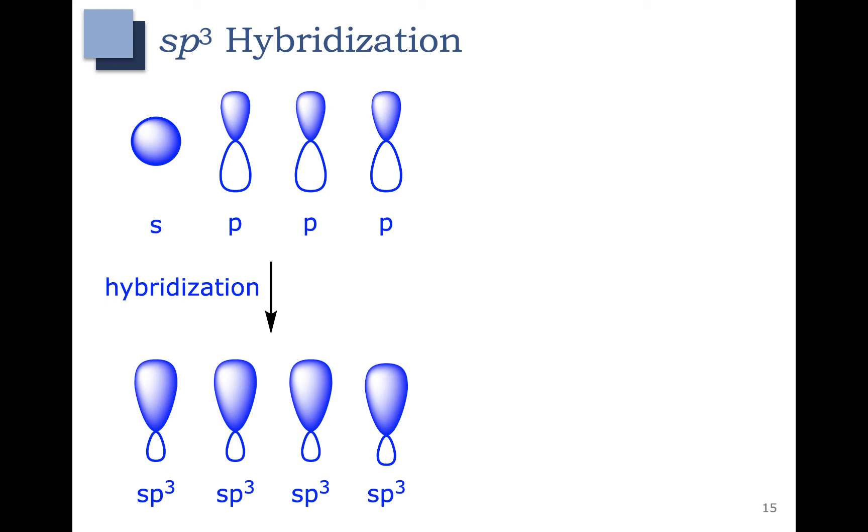They kind of look like lopsided p orbitals because this one side with darker phase is a little bit bigger than the little lobe here. And they all look the same except they sit a little differently in space.